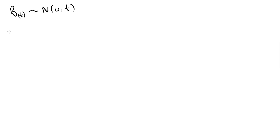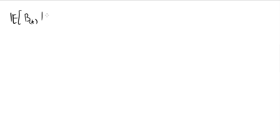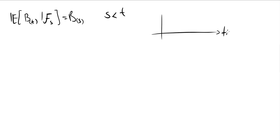I'll show only one property — specifically that the expected value of the Brownian motion given the filtration until time T is going to be equal to the Brownian motion at time S, where S is less than T. If you want to think about it pictorially, imagine a timeline with the Brownian motion plotted on it.